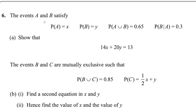The events A and B satisfy: probability of A equals X, probability of B equals Y, probability of A union B equals 0.6Y, and probability of B given that A equals 0.3. Show that 14X plus 20Y equals 30.